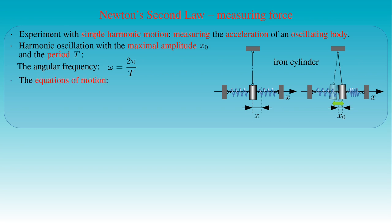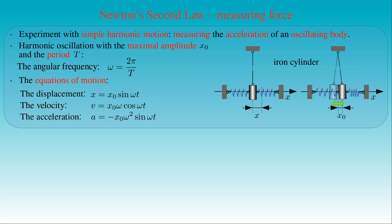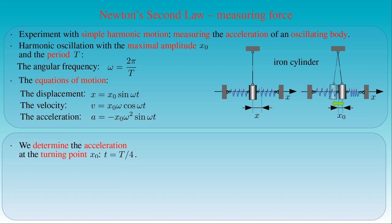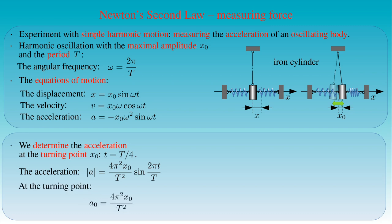We already know the equations of motion of simple harmonic motion. The displacement x of the oscillating body is given by x0 times sin(ωt). Its derivative with respect to time is the velocity, equal to x0ω cos(ωt). The time derivative of the velocity gives the acceleration, which is given by −x0ω² sin(ωt). If the maximum amplitude x0 is given and we measure the period T, we can determine the acceleration at any given time t. The magnitude A0 of the acceleration at the turning point x0 is equal to 4π² times x0 divided by the square of the period T.